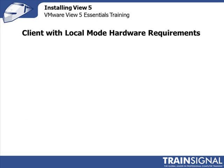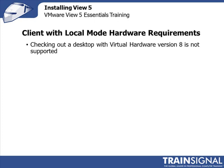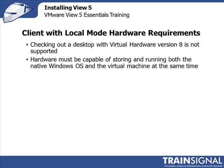For clients with local mode, there are specific hardware requirements. You cannot check out a desktop running virtual hardware version 8 in local mode — version 8 was introduced in vSphere 5, so virtual desktops must be hardware version 7 or earlier. The hardware you're running locally needs to support both the native OS and the virtual machine at the same time. Make sure your users have enough CPU, disk, and memory resources to run both simultaneously.